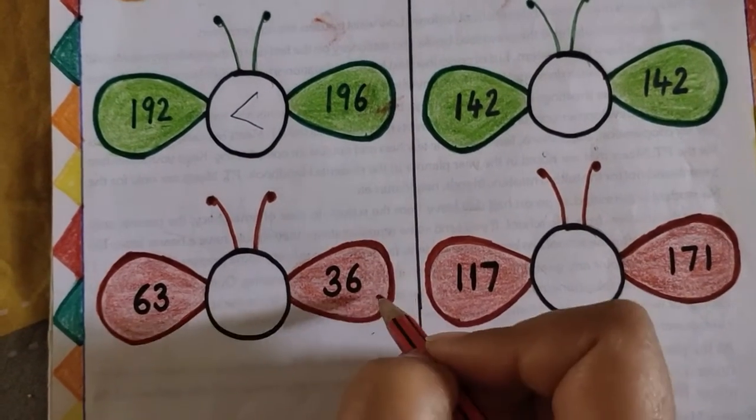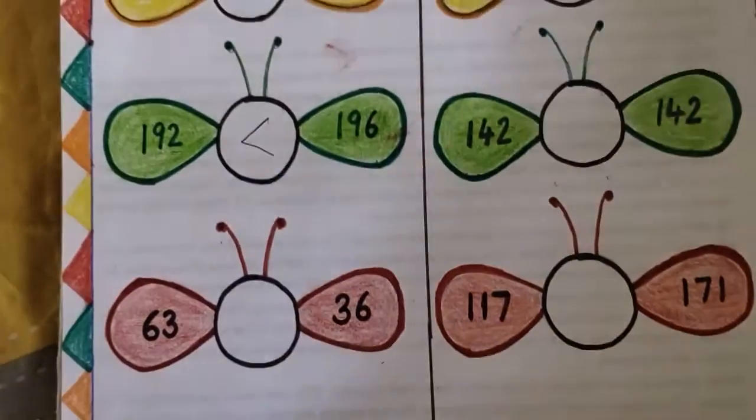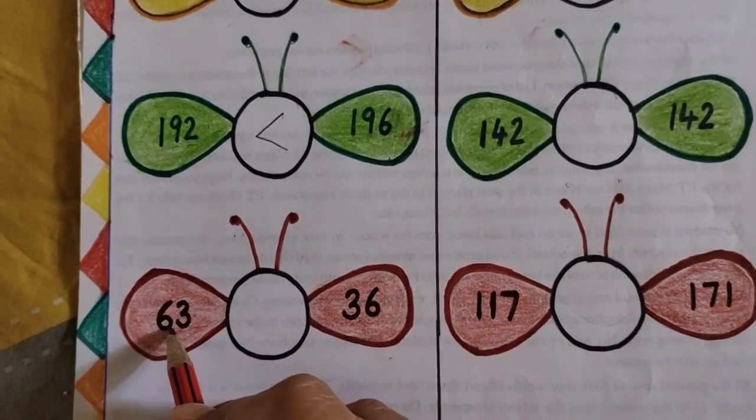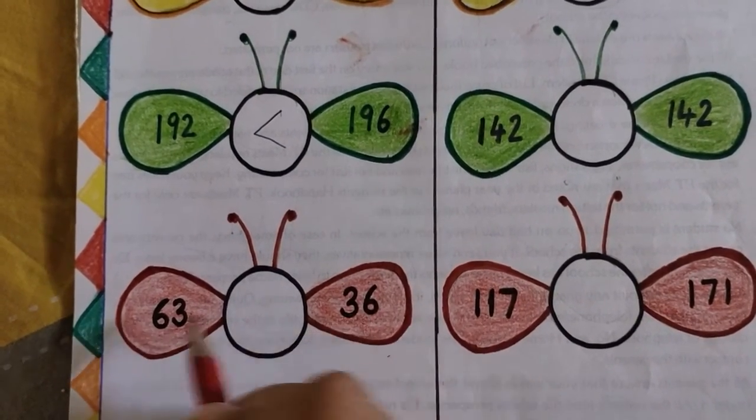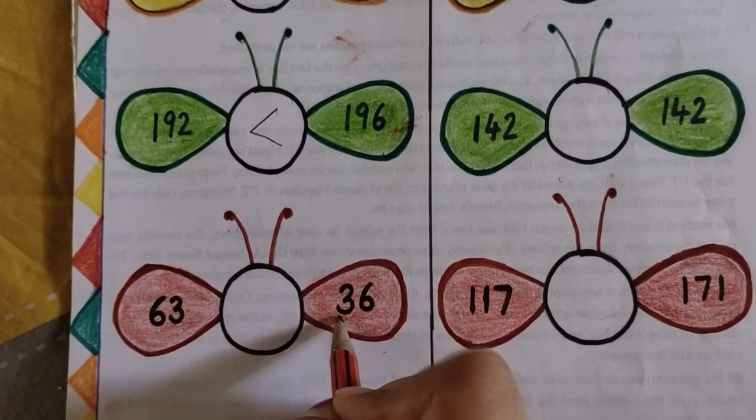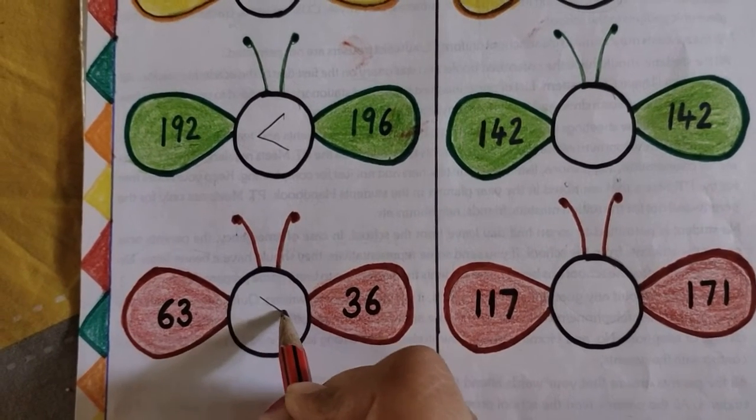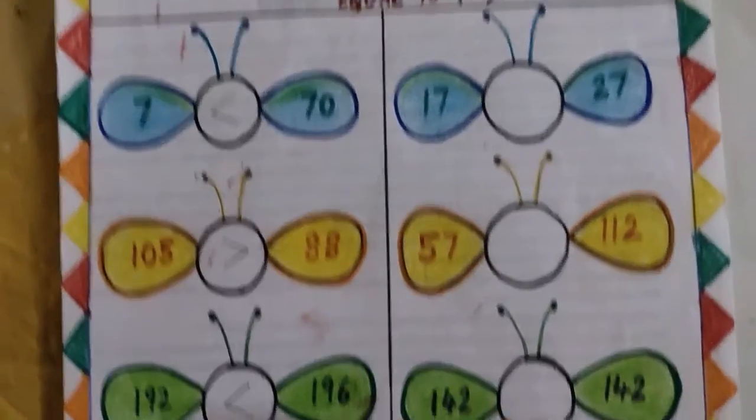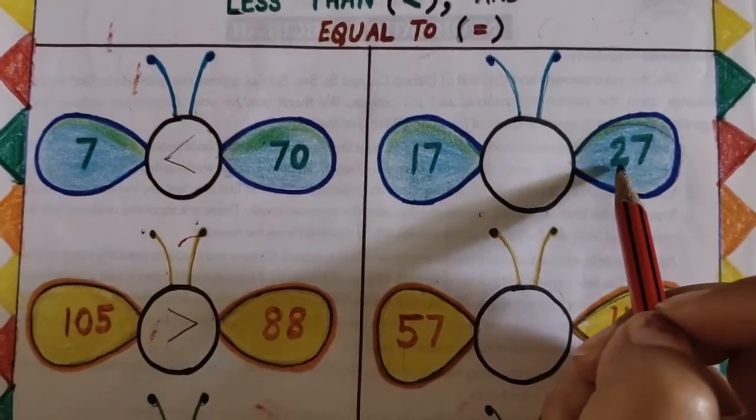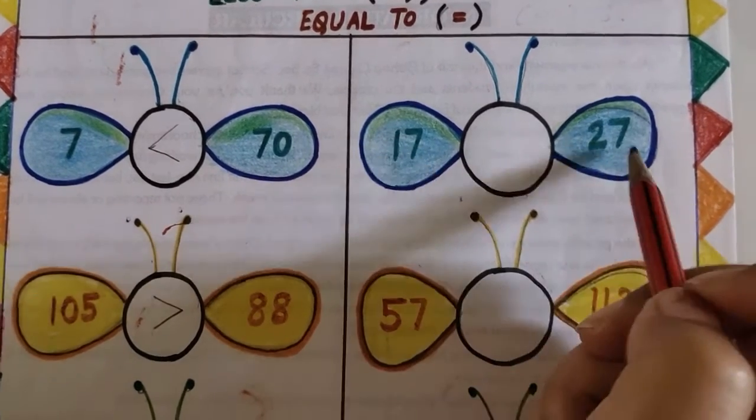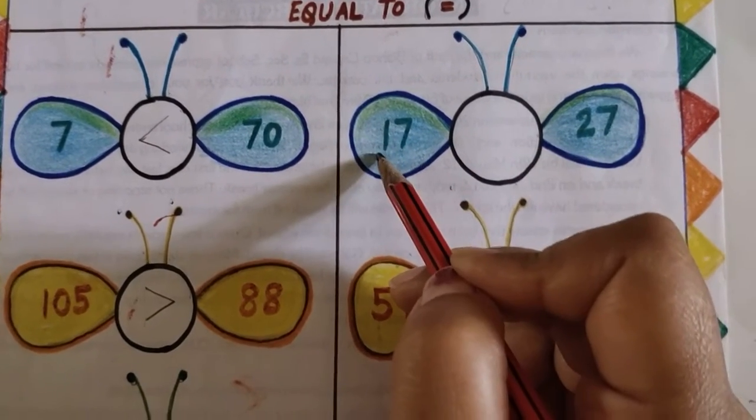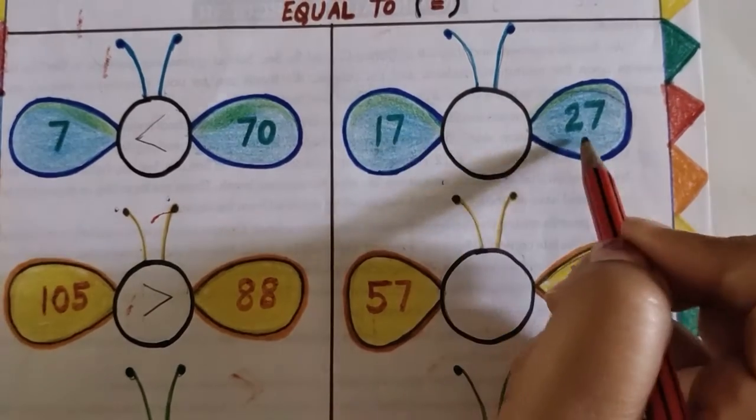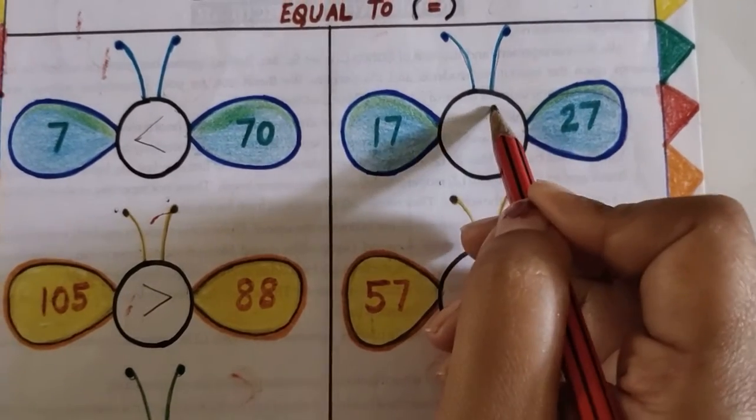Next example, similarly, between 63 and 36. Two digit number both sides. 6 is greater than 3, so 63 must be greater than 36. Then comes 17 and 27. Again 2 digit number. We will start comparing from this side. 2 is greater than 1, so which one is greater? 27.